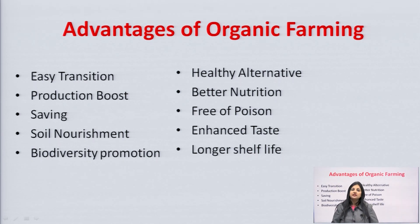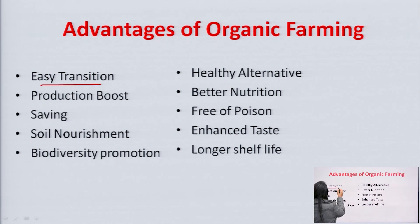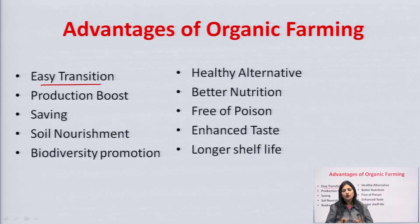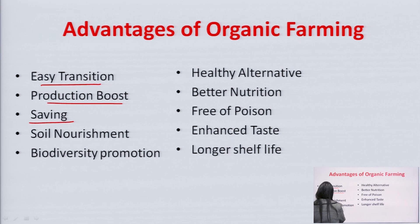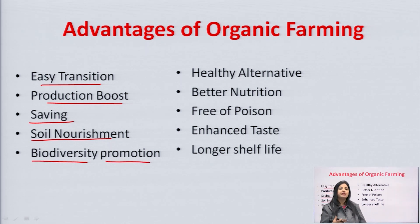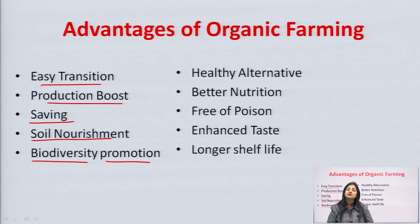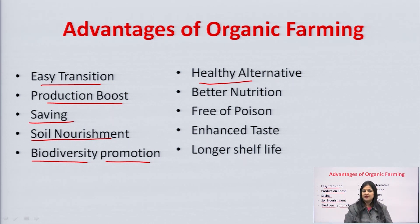Organic farming has certain advantages. Number one, it is easy to transition to. It provides a production boost — since the fertility of the soil is enhanced, the production of crops grown by organic or biodynamic farming is at a high rate. It is a cost-saving technique which prevents the use of chemicals and pollutants. It provides soil nourishment and promotes biodiversity, because you are allowing plants, tiny insects, animals, and bio-organisms to grow in the soil and contribute their output.